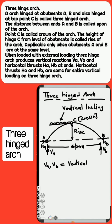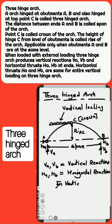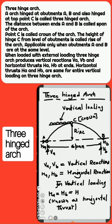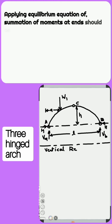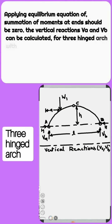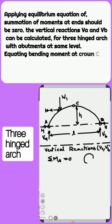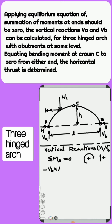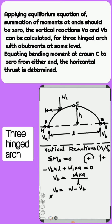A 3-Hinged Arch produces vertical reactions V-A and V-B, and horizontal thrusts H-A and H-B at the ends. Horizontal thrusts H-A and H-B are the same for entire vertical loading on a 3-Hinged Arch. Applying the equilibrium equation — summation of moments at ends equals 0 — the vertical reactions V-A and V-B can be calculated. Equating the bending moment at crown C to 0 from either end, the horizontal thrust is determined.